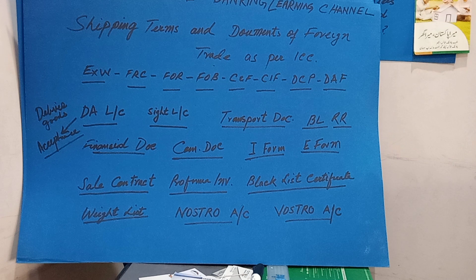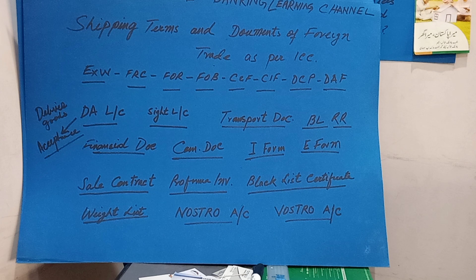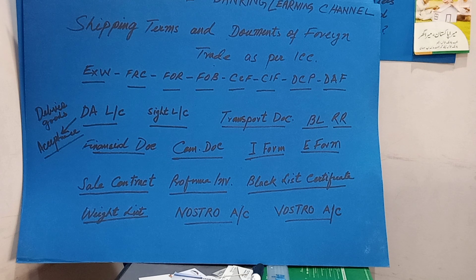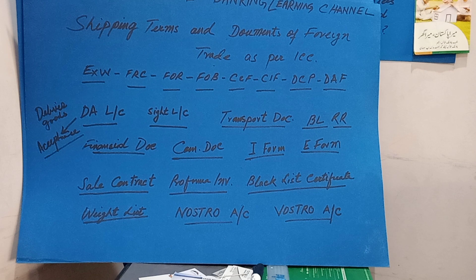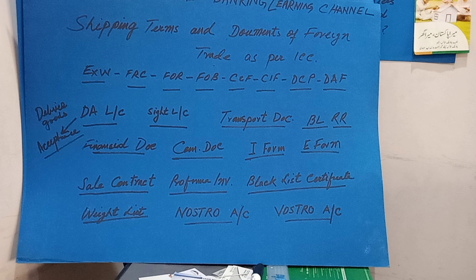Transport documents include the bill of lading, which is a document of title, and the railway receipt (RR). Financial documents include the draft, also known as the bill of exchange. Commercial documents include the commercial invoice, I-form (necessary for import) and E-form (for export), sale contract, proforma invoice, and blacklist certificate. Nostro account means our account maintained in another bank. Vostro account means their account maintained with us at our end.